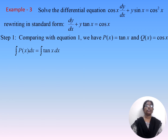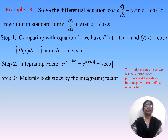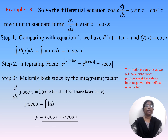Solve cos(x)·dy/dx + y·sin(x) = cos²(x). Rewriting in standard form: dy/dx + y·tan(x) = cos(x). Here P(x) = tan(x) and Q(x) = cos(x). The integrating factor is e^(∫tan(x)dx) = e^(ln|sec(x)|) = |sec(x)|. Multiplying both sides by sec(x) and expressing the left-hand side as a perfect derivative gives d/dx(y·sec(x)) = 1. Integrating, the solution is y = x·cos(x) + c·cos(x).